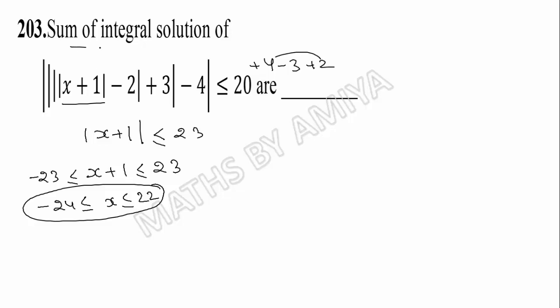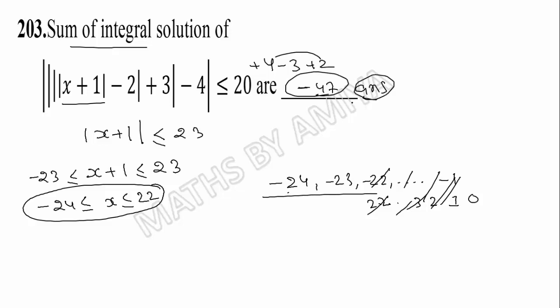But what do we have to find? We have to find the sum of integral solutions. How many negative do we have? Minus 24, minus 23, minus 22 and so on till minus 1, then 0, and how many positive we have: 1, 2, 3 till 22. If we do the summation, the plus minus signs cancel out, left with only two values: minus 24 and minus 23. So the summation is minus 47 and this is our answer.